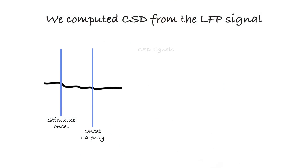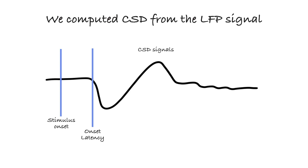Moreover, these grating stimuli evoke very strong responses from V1 neurons. To localize the specific cortical layers, the responses evoked by these stimuli were computed using the current source density, or CSD, from the LFP signal. From the CSD, we estimated the onset latency of the response evoked by the different visual stimuli in each layer, and determined which layers were activated first by each stimulus. In this schematic, the onset is when there is a negative oscillation representative of current sink. Our rationale was that the layers activated first by each stimulus type are indicative of the circuits that initiate the processing of that visual stimulus, as different layers receive distinct inputs.